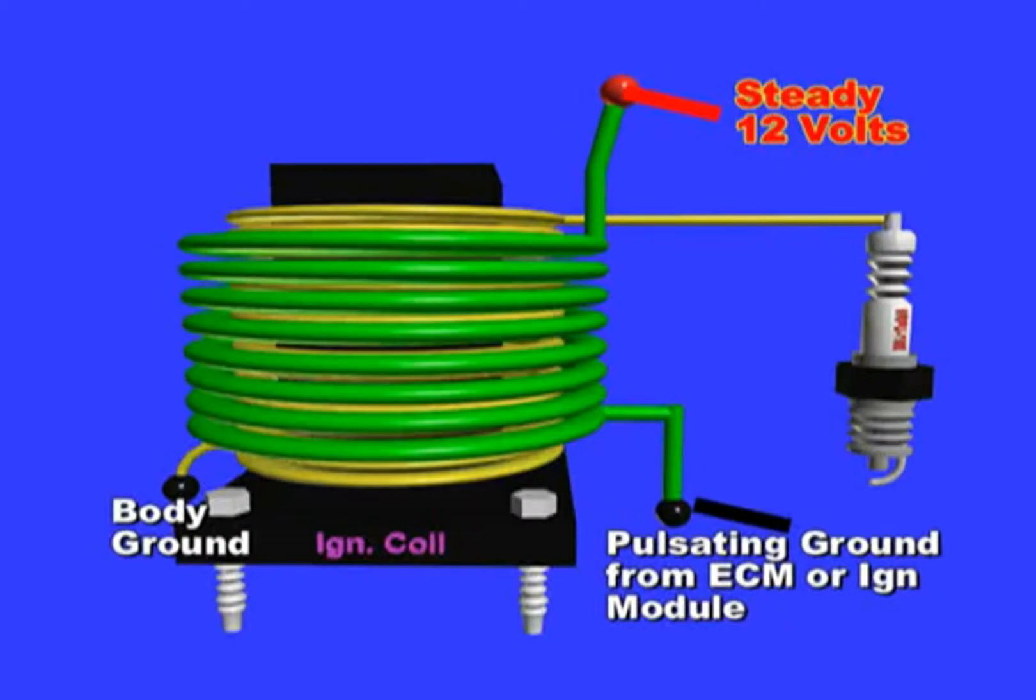The ignition module or ECM then provides a pulsing ground to the other side. The secondary circuit is connected to the spark plugs and carries the high voltage. A fault at either of these two circuits will create a misfire. Whatever happens at the primary is mirrored at the secondary.